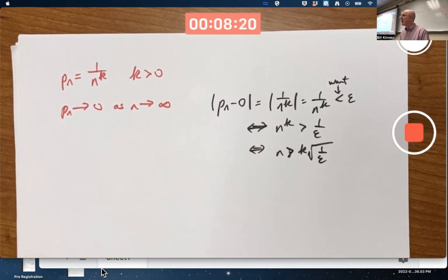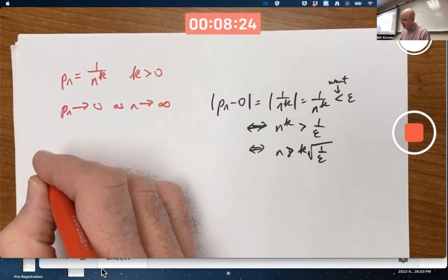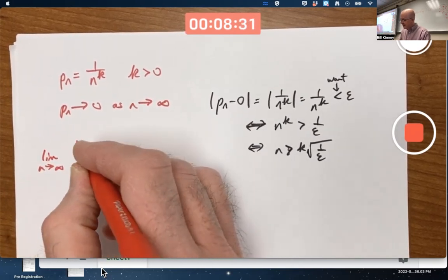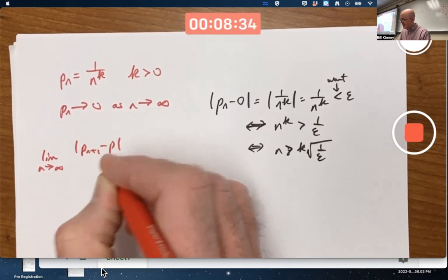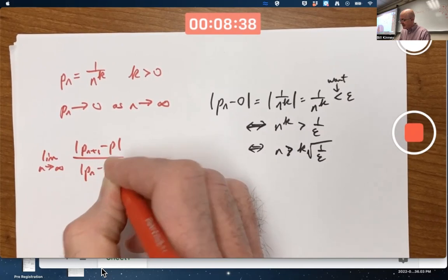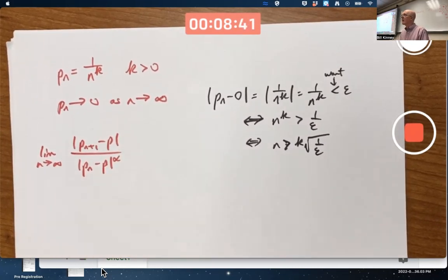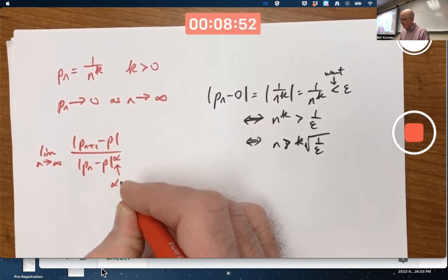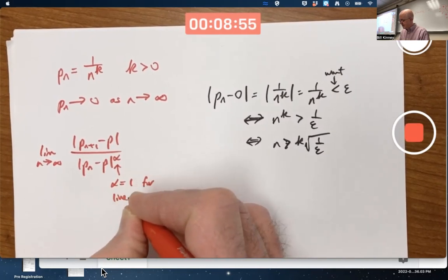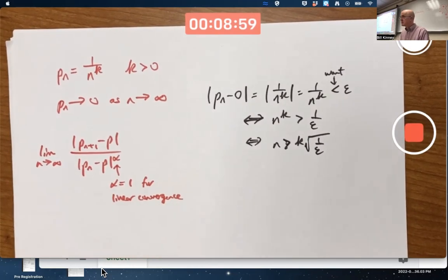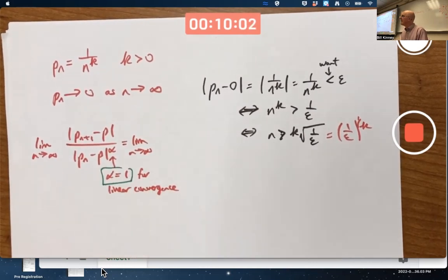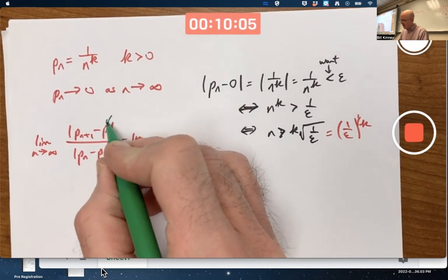Does it converge to 0 linearly? We'd have to go back to the definition of linear convergence. You'd need to compute the limit as n goes to infinity. Remember what it was? The absolute value of pn plus 1 minus p over the absolute value of pn minus p to the alpha power, where alpha is 1 for linear convergence, and you're wondering, does this equal some positive constant? Alpha equals 2 for quadratic convergence. Let's go ahead and assume alpha is 1 here and go ahead and compute this limit.